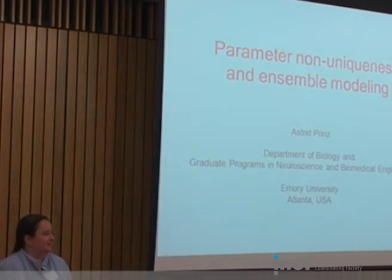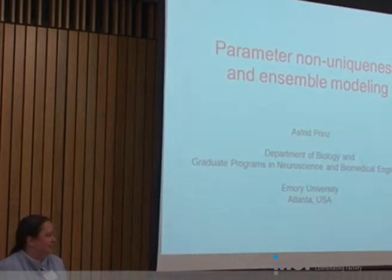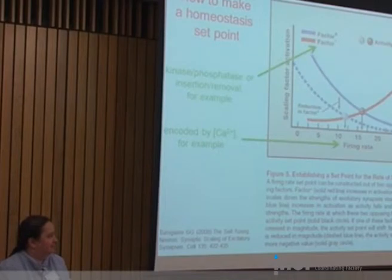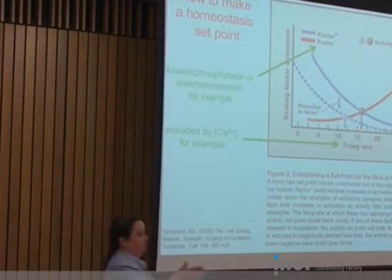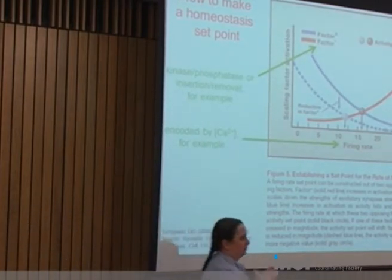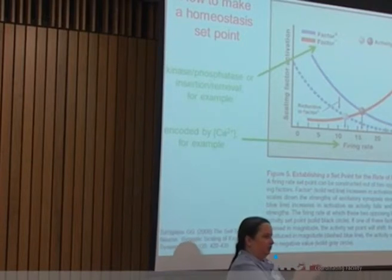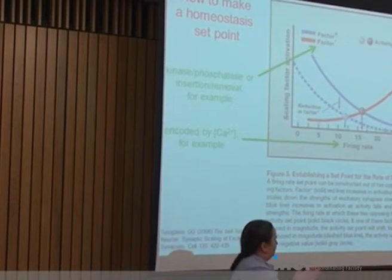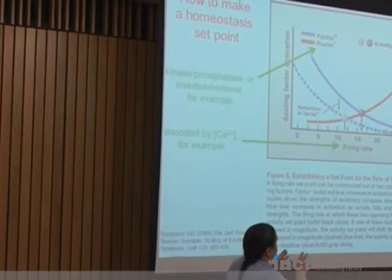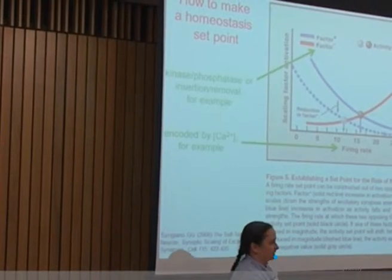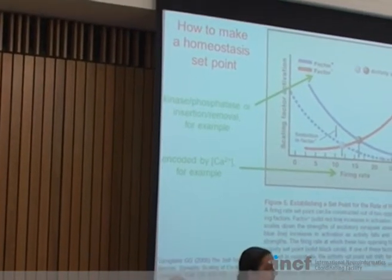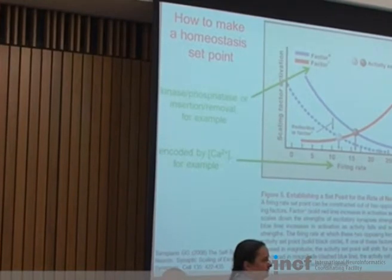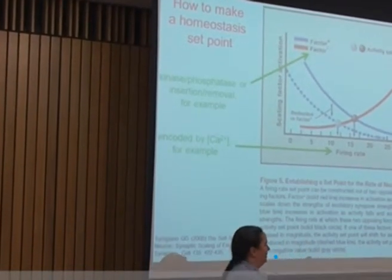Before getting into today's topic, I wanted to tie up a loose end from last time. The question came up: how can you make a set point for homeostasis? Basically, how can you encode what target value some property should be? I don't think I answered that very well, so I went back and looked around. In most homeostatic processes, we don't really know the molecular details of how a set point is defined.